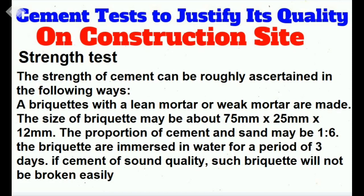For the strength test, the strength of cement can be roughly assessed in the following way: briquettes with a lean or weak mortar are made. The size of briquettes may be about 75 mm by 25 mm by 12 mm, with a proportion of cement to sand of 1:6.